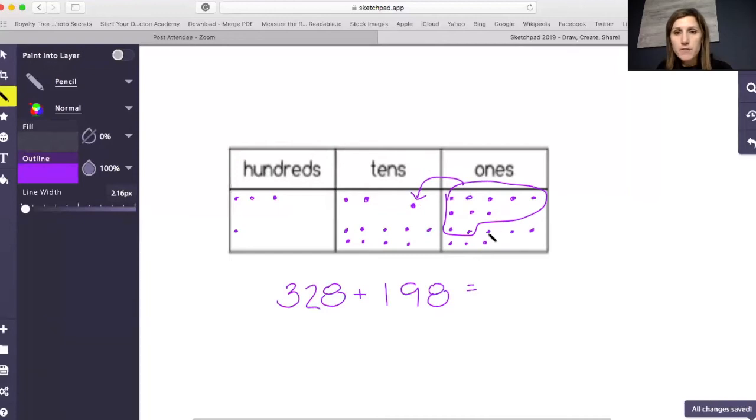Now, how many ones do I have left? One, two, three, four, five, six. So I know my answer is going to have a six in the ones place. Now I can count up my tens,